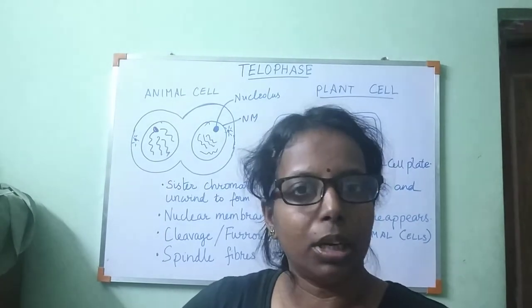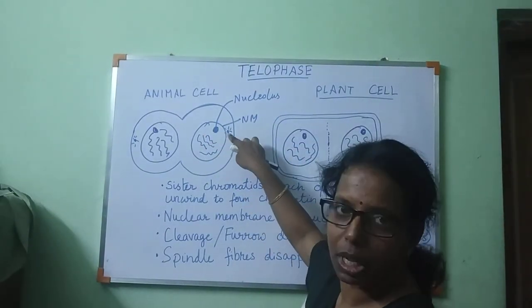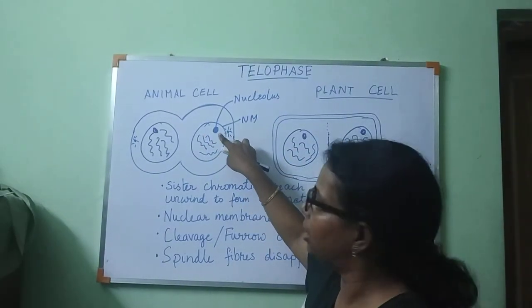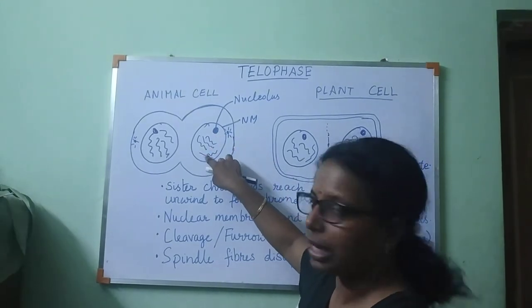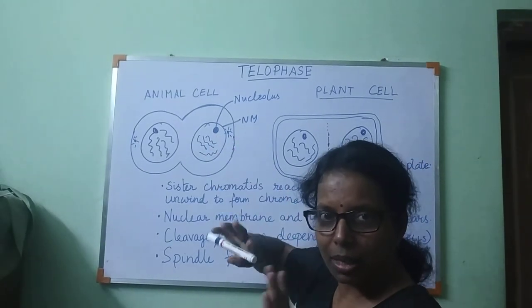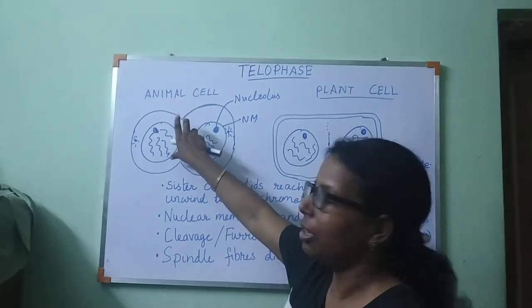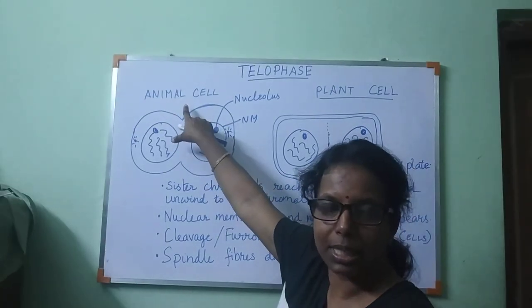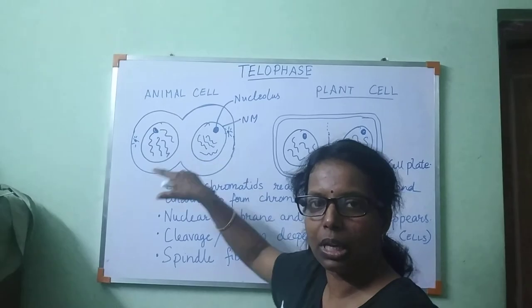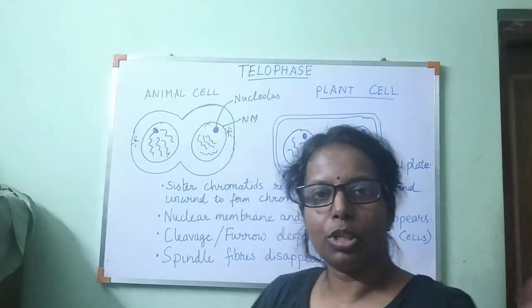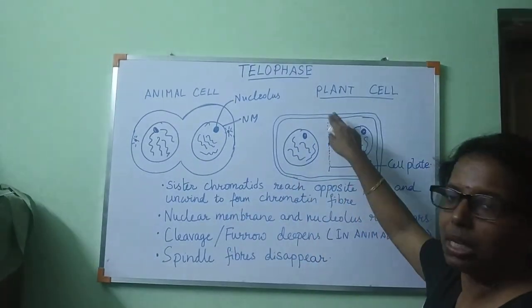So then you have to draw telophase. In telophase you have to show that the nuclear membrane reappears, the nucleolus reappears, and the chromatids unwind to form chromatin fibers. If it is an animal cell given in the question paper, draw the animal cell only. If a plant cell is drawn, draw the plant cell only.